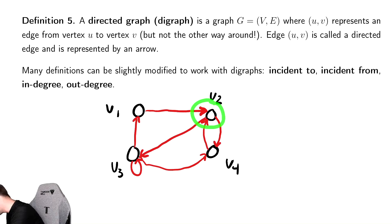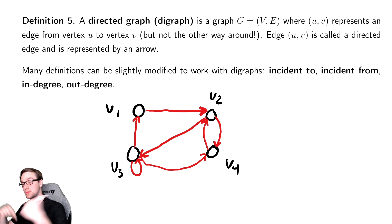For V2 here, it has in-degree 2 because there's two arrows that point into it, and out-degree 2 because there's two arrows that point out of it. By contrast, V4 has two arrows pointing in and one arrow pointing out, therefore has in-degree of 2 and out-degree of 1.